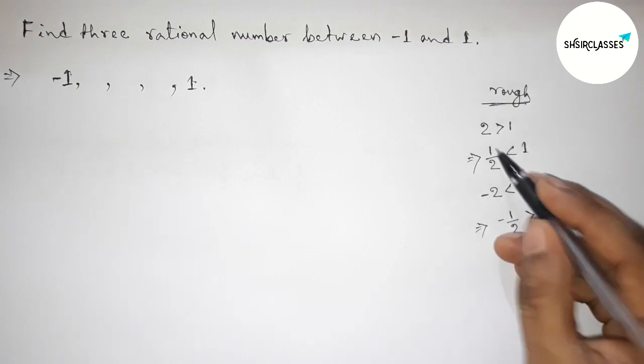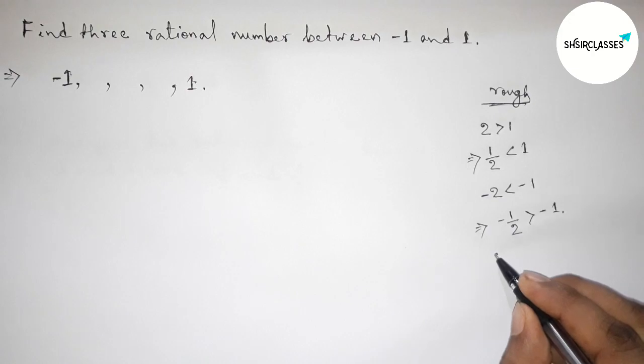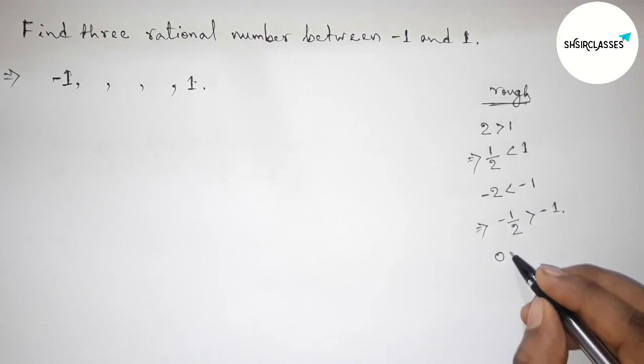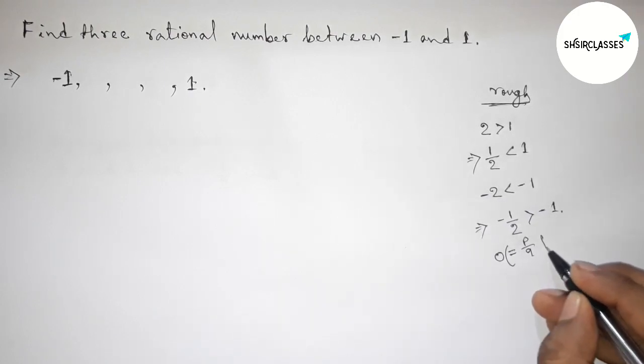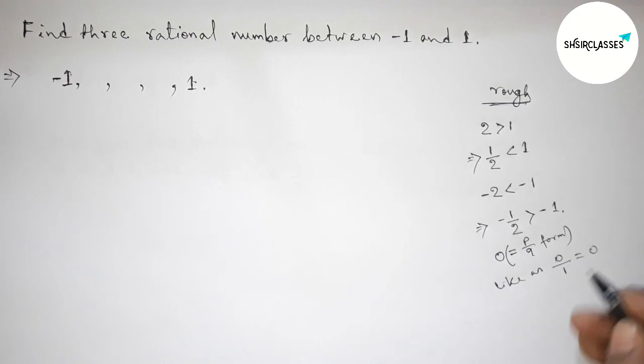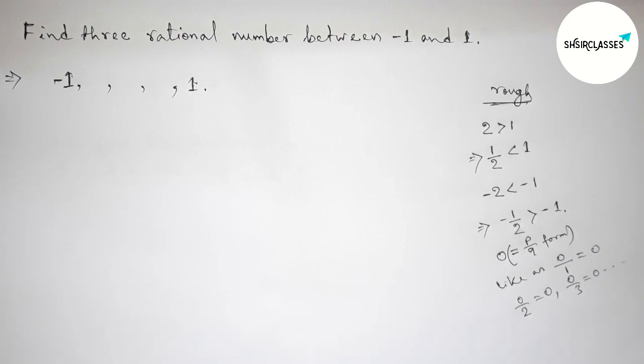Both of these are rational numbers. Now taking zero. We can say that zero is a rational number because we can express zero as p by q form, like zero by one, zero by two, which equals zero, zero by three, and so on. So zero is a rational number.